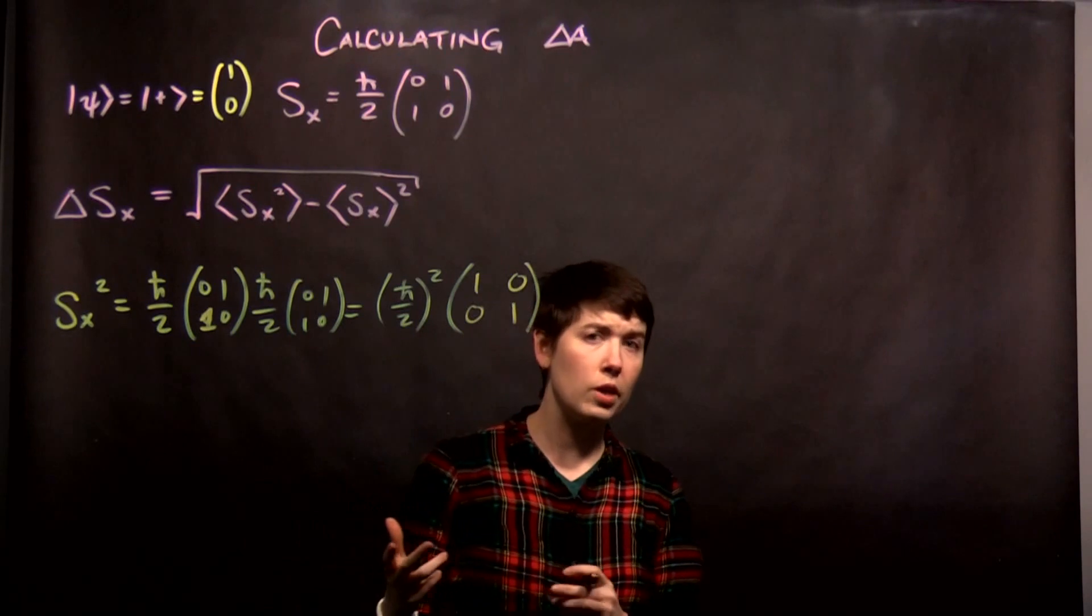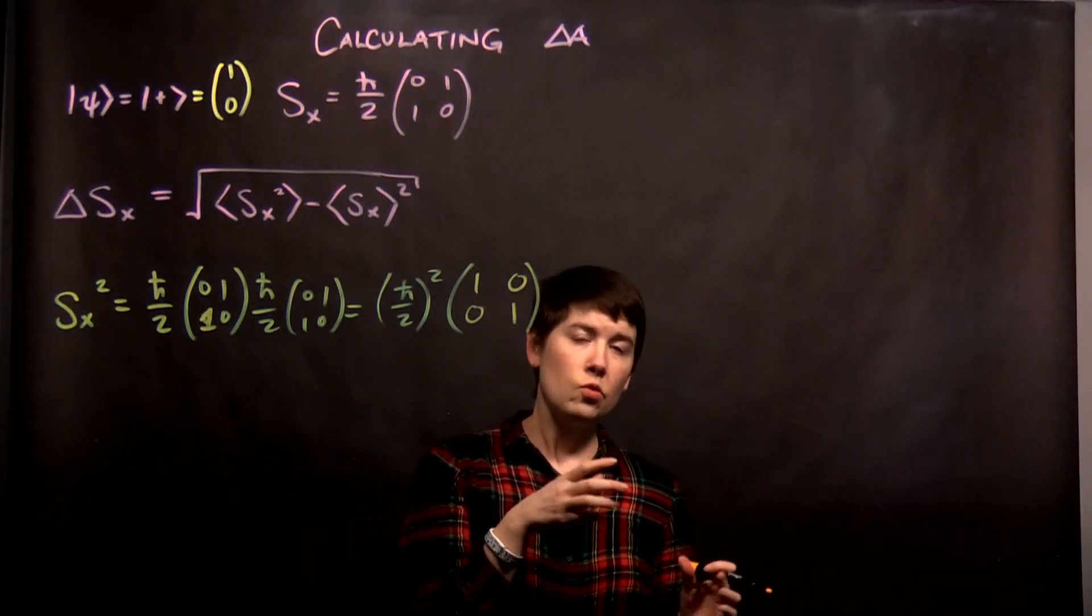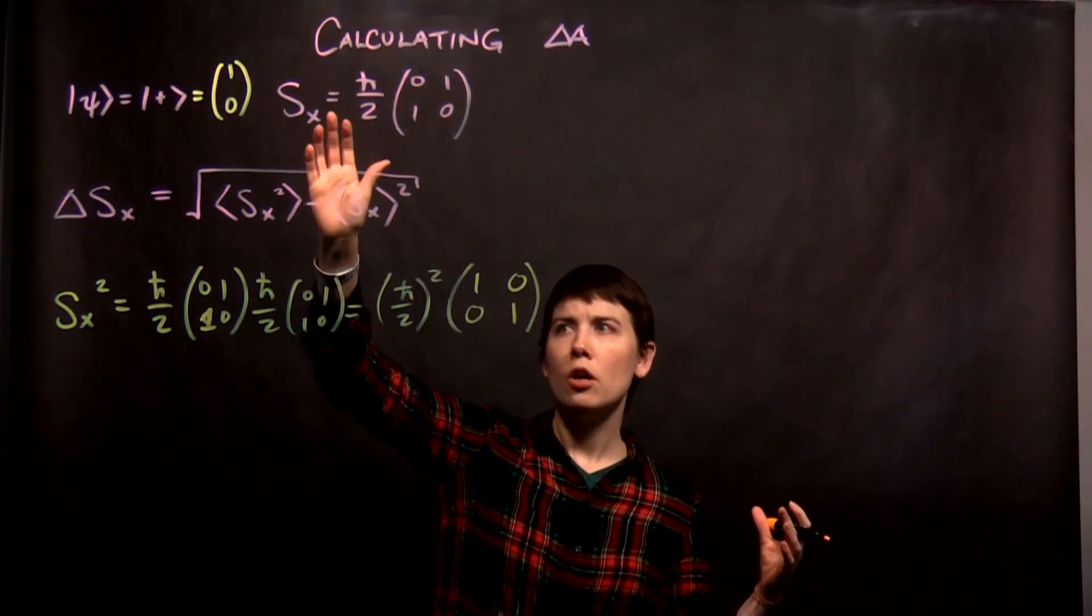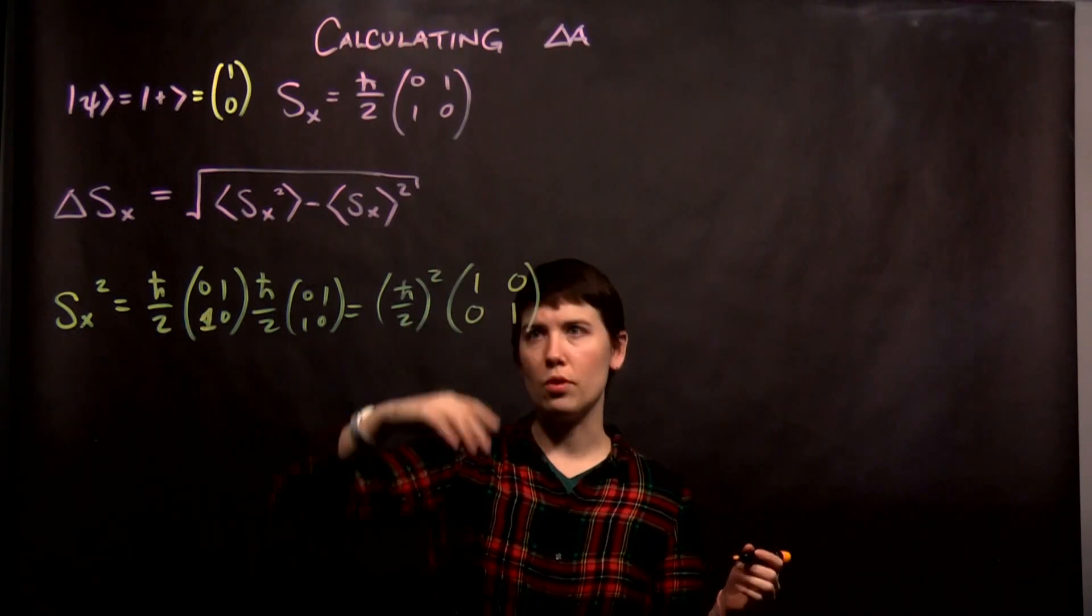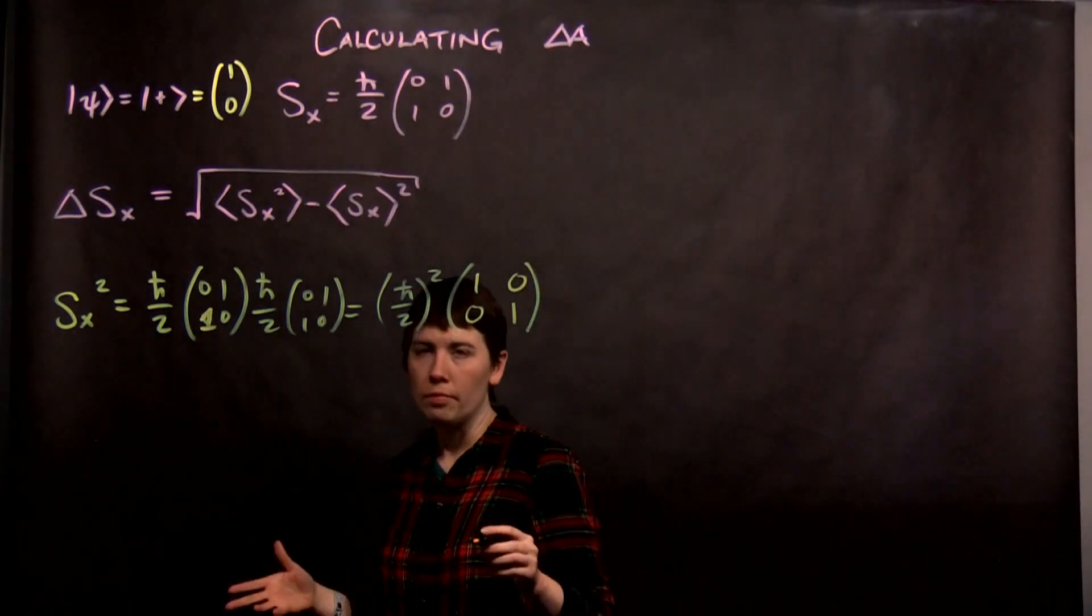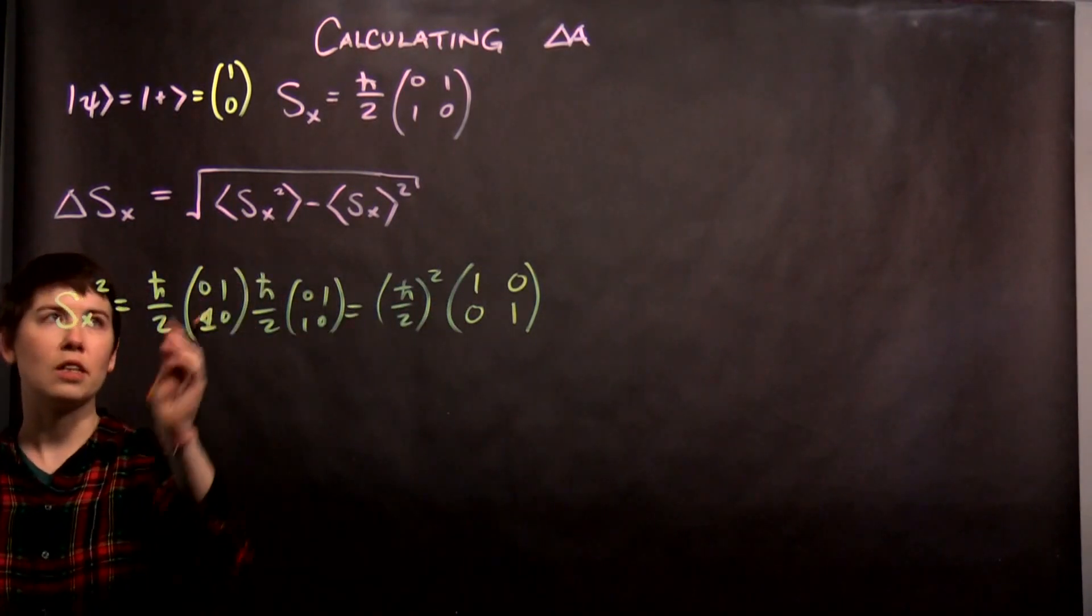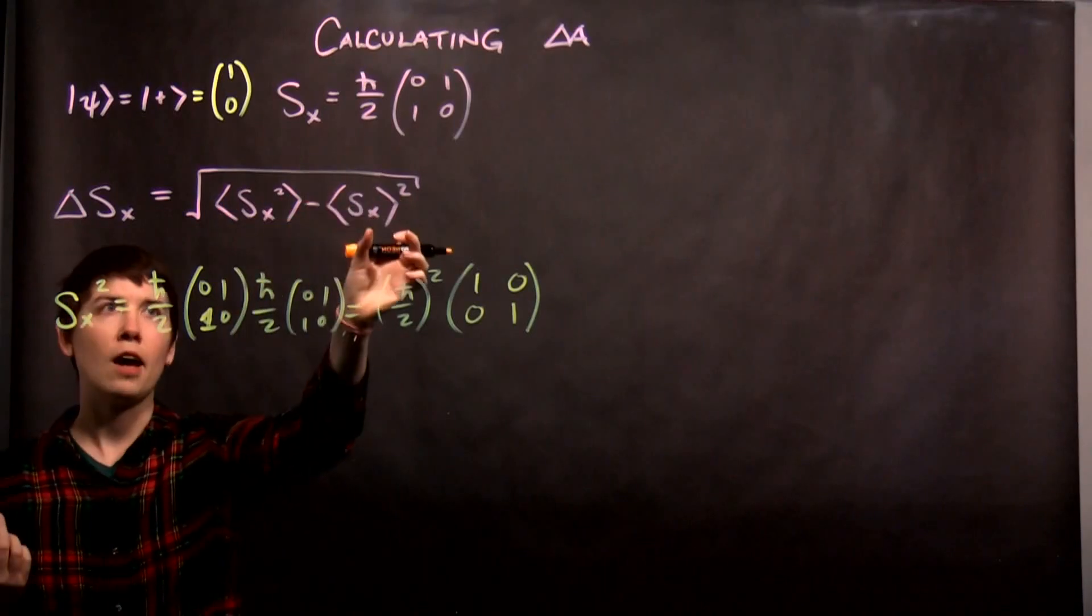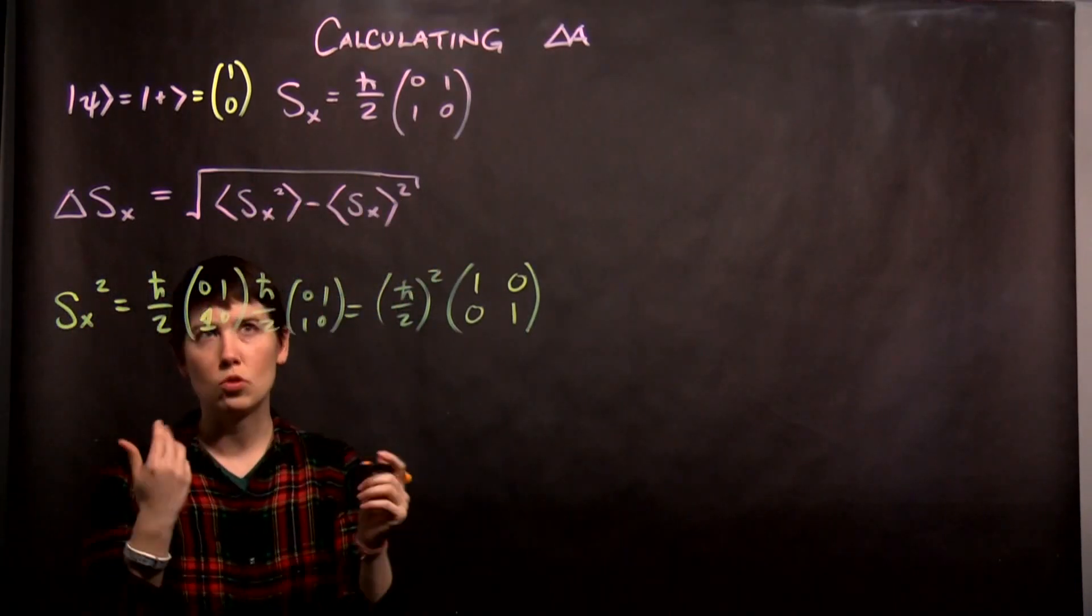And actually when we calculated the S squared operator, so that 3-dimensional spin operator, we already actually did this calculation and got this already. So this is something we've done before. So we have that. And so now we can calculate out each of these terms and then plug them in. So what you're actually going to have here is a scalar minus a scalar. So I think it's nice to just do it out first.